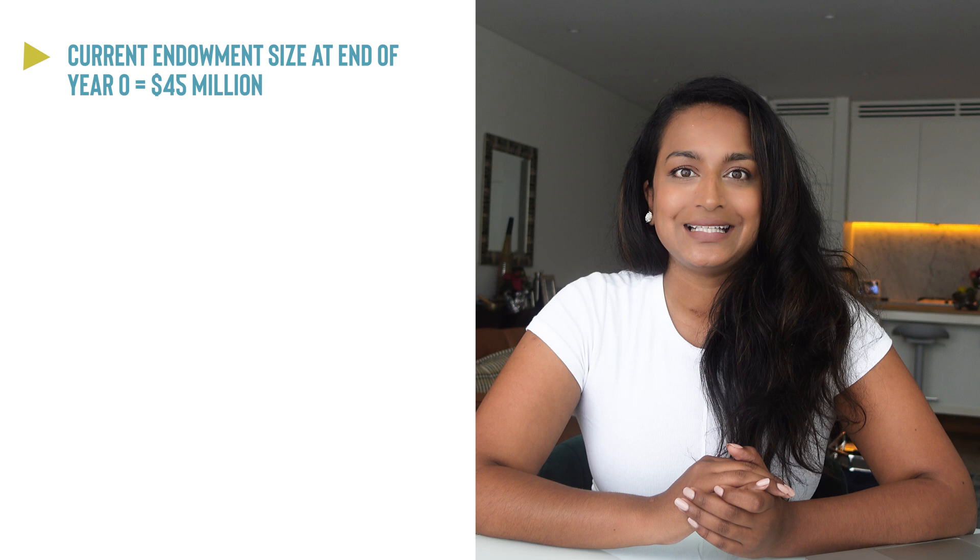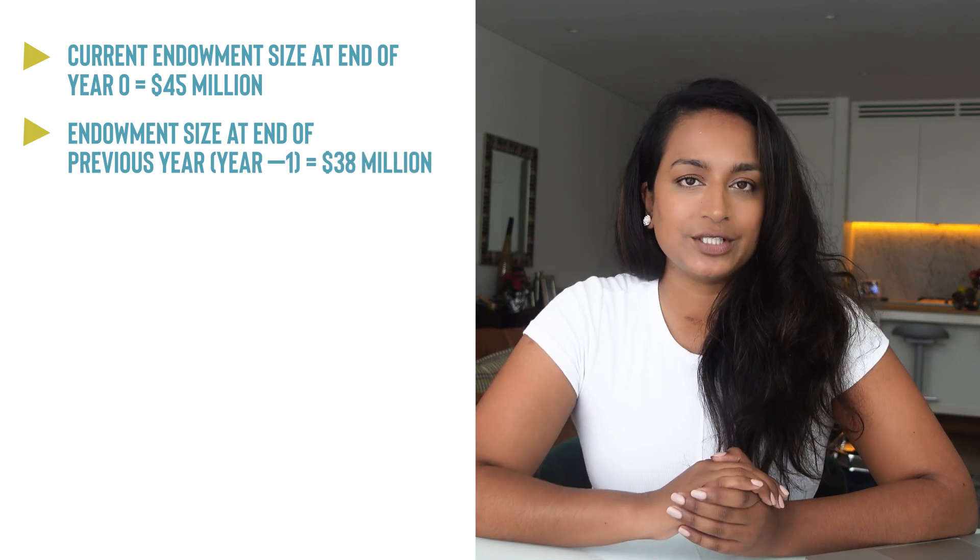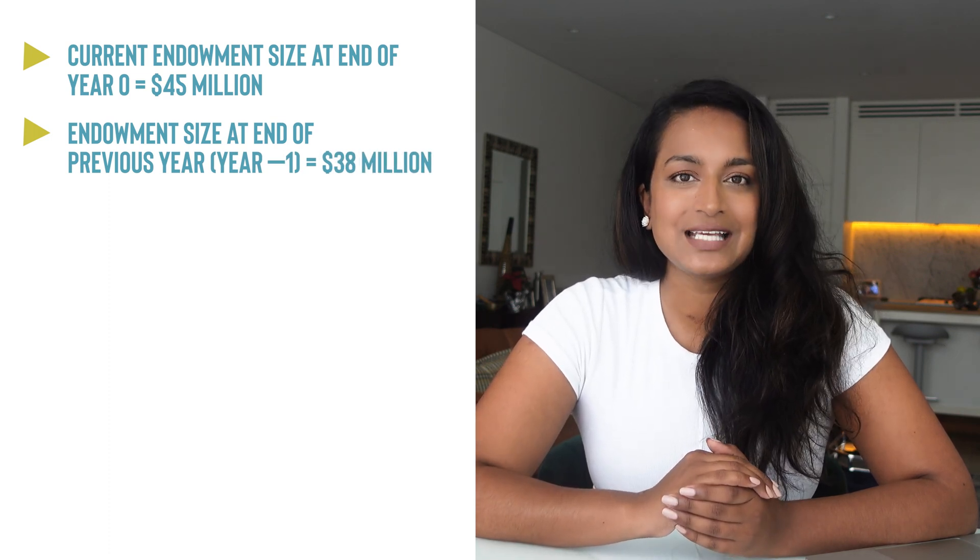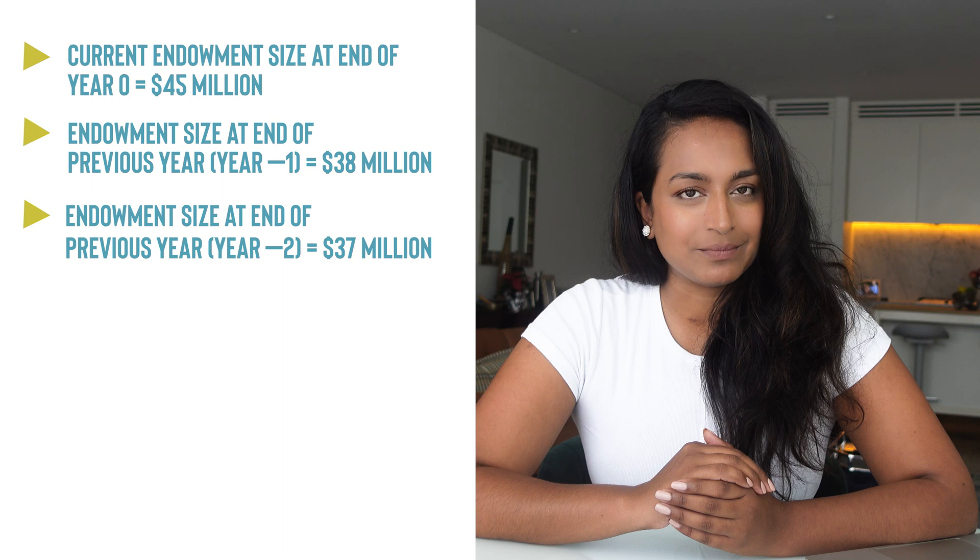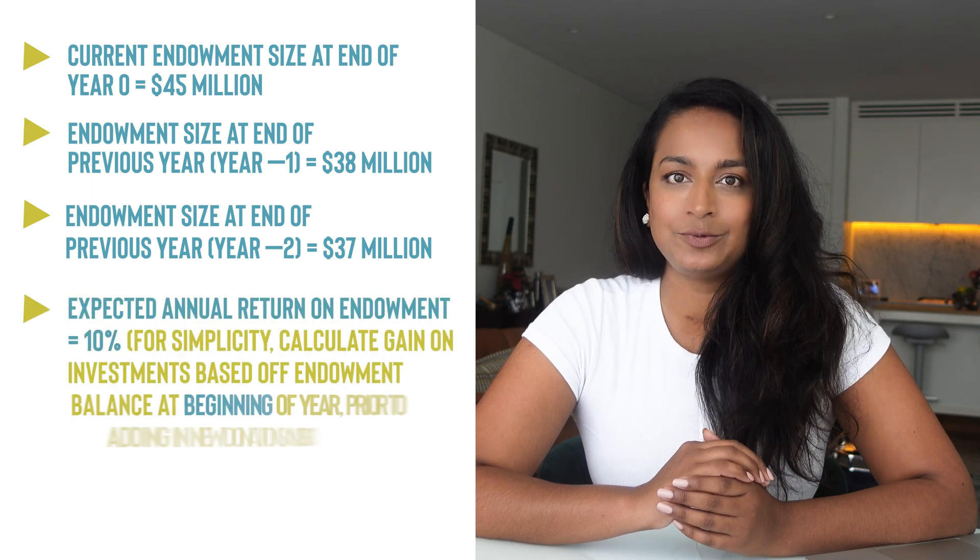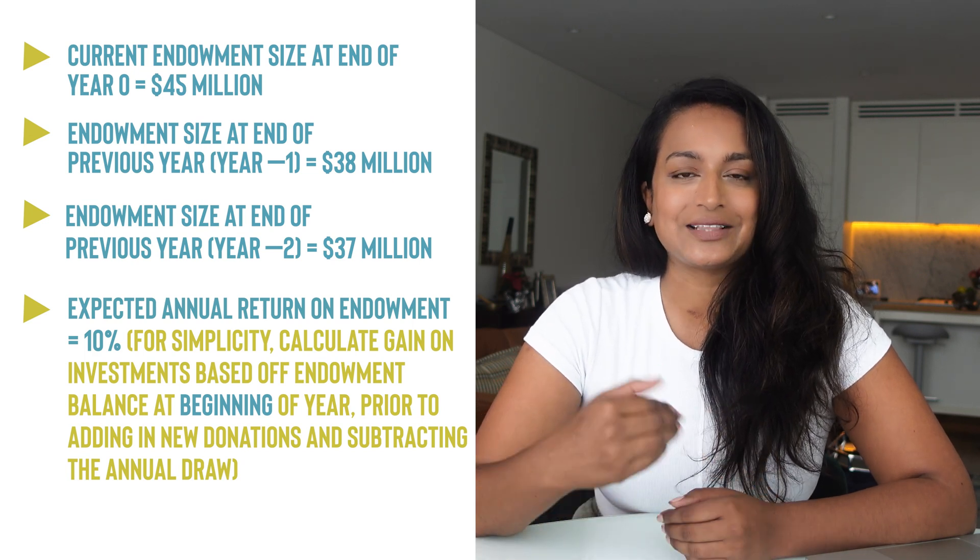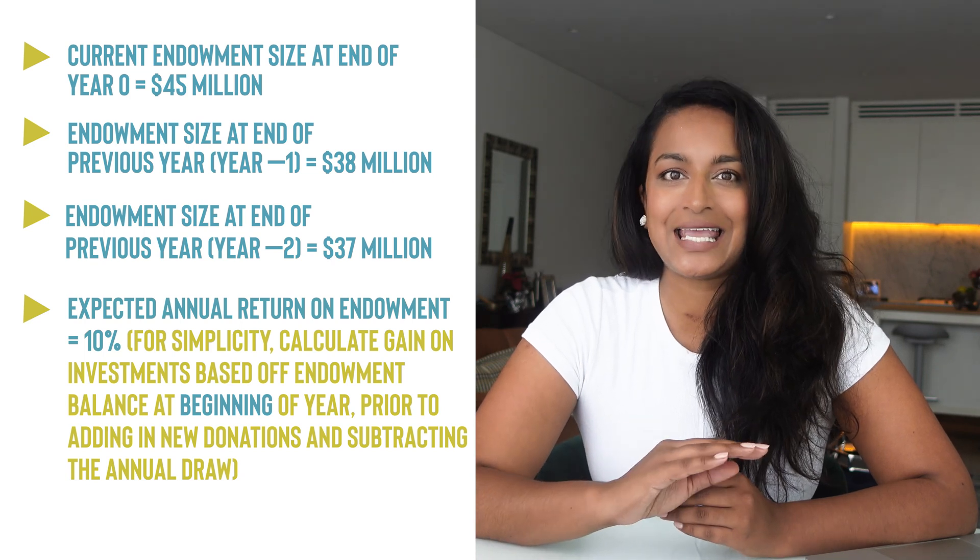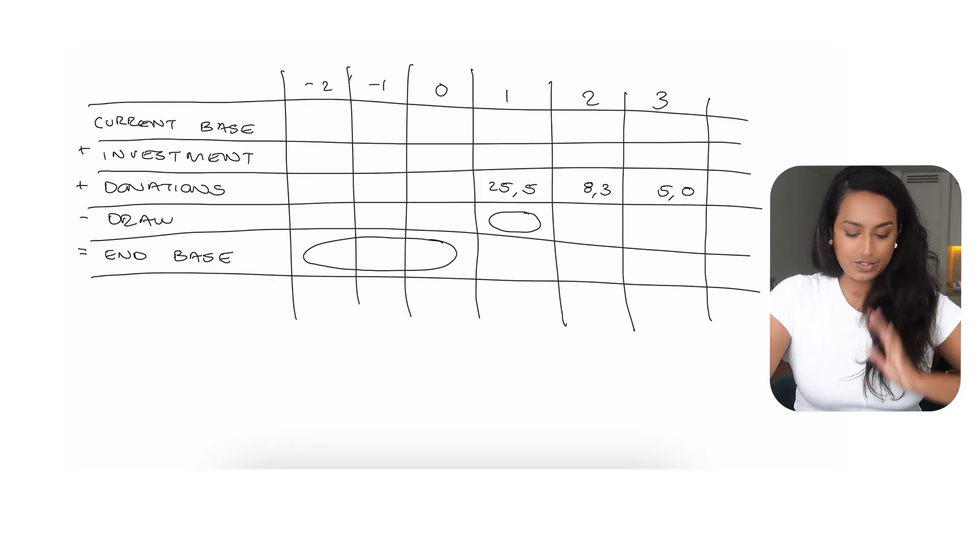I can see that I'm missing some key information. So at this point, the interviewer tells me that the current endowment size at the end of year zero is equal to $45 million. The endowment size at the end of the previous year, so year minus one, is $38 million. And the endowment size of the year before that, so year minus two, is $37 million. The expected annual rate of return on the endowment is 10% of the endowment base at the start of the year prior to adding in any new donations or subtracting the annual draw. Excellent. Now with that information, I can start plugging in.